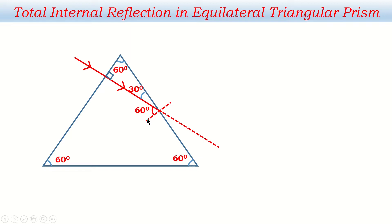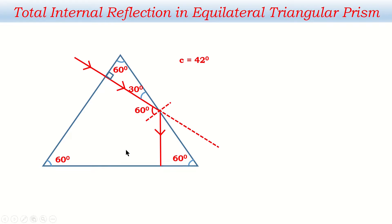The perpendicular at the second face makes 90 degrees with the face. If the internal angle is 30 degrees, the remaining angle is 60 degrees, so the angle of incidence is 60 degrees at that face. Since the critical angle for glass is 42 degrees and 60 degrees is greater than 42 degrees, instead of refraction, the light reflects back in the same medium — this is total internal reflection. Following the law of reflection, the angle of reflection is also 60 degrees.